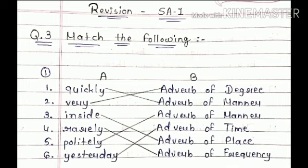First is quickly. As we all know, quickly is the adverb of manner, so we will match it with adverb of manner. And very, very kya hai, adverb of degree, to hamein very ko adverb of degree ke saath match kar dena hai.